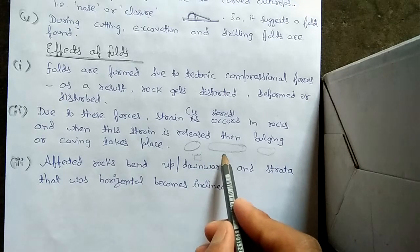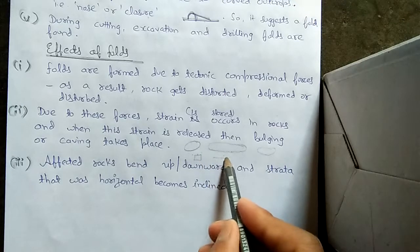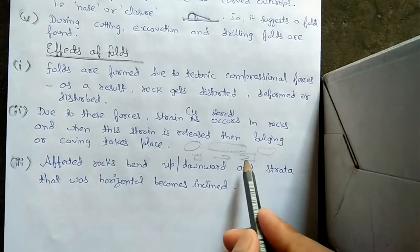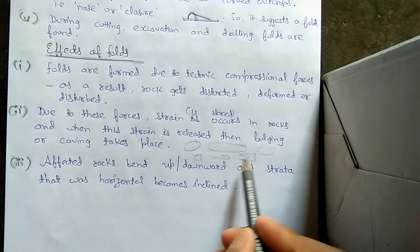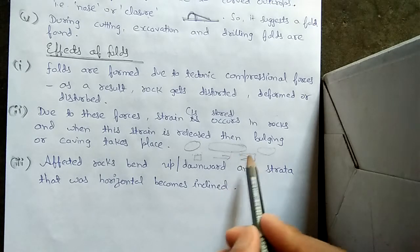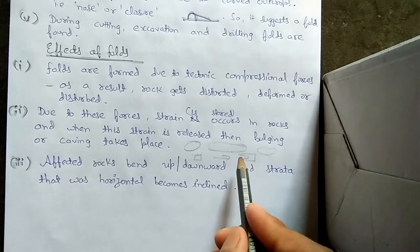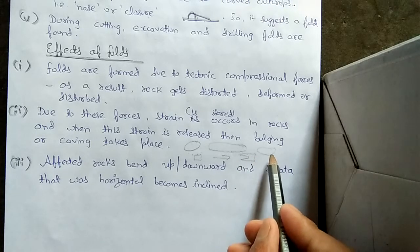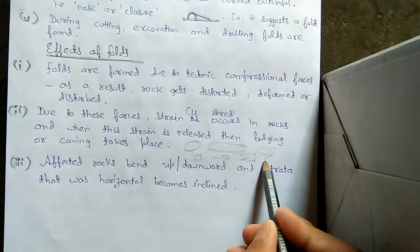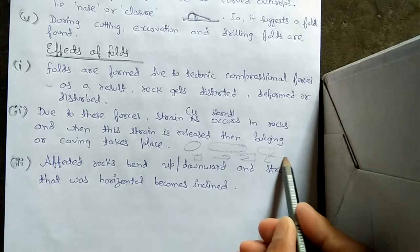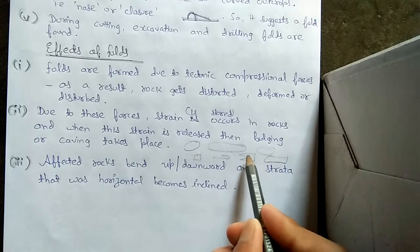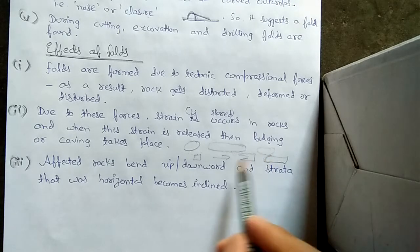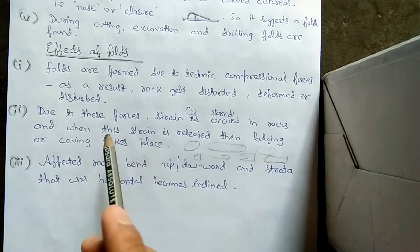Suppose this is a rock and tensional force is stored in it. A force acts on it and it becomes like this - what has happened here? Caving took place. Caving means a cave-like structure is formed. This process is called caving. When this strain or stress is released, it will again come back to its original position or move more than that. This was the straight part and this part has come out because of the release of energy, so this has become like this - this is bulging.